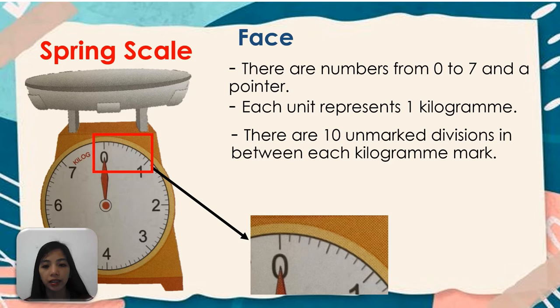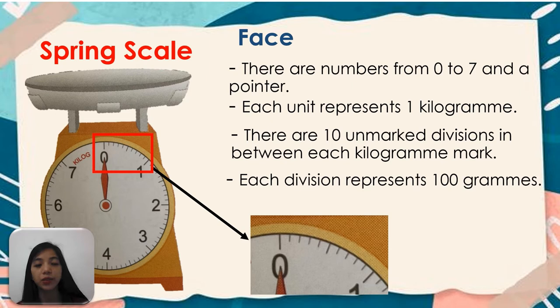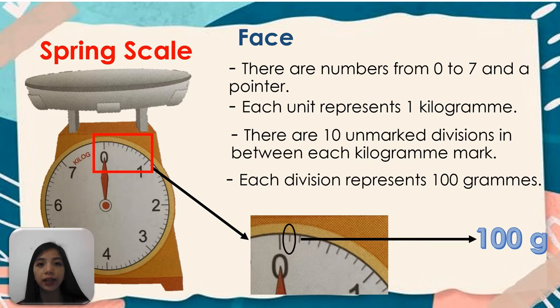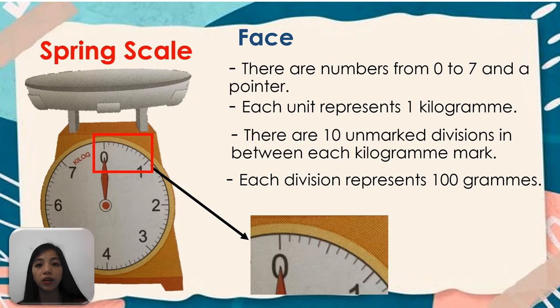Each division represents 100 grams. So we can count like 0, 100 grams, 200 grams, 300 grams, 400 grams, 500 grams, 600 grams, 700 grams, 800 grams, 900 grams, 1 kilogram, or 1000 grams.